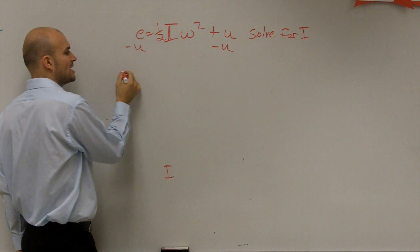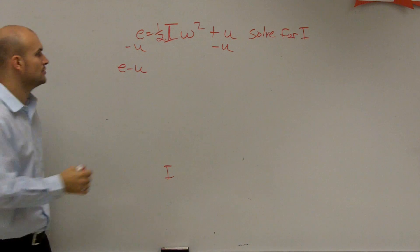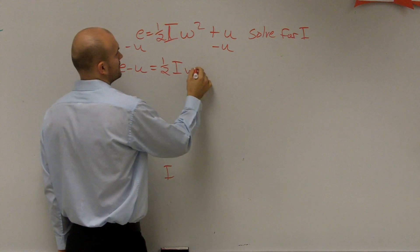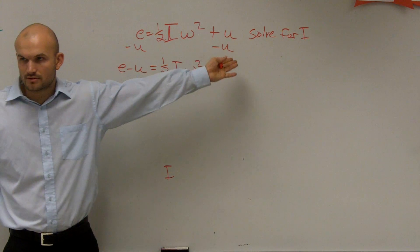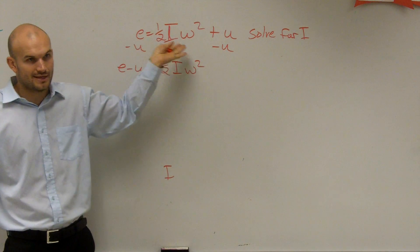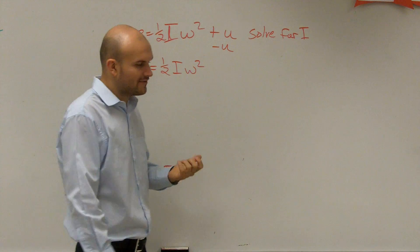Subtract it from both sides. Since these are not like terms, I cannot subtract them, and I'm just left with e minus u equals one half i w squared. Positive u minus u goes to zero. Zero plus anything is just going to be what your original anything was. So now I need to look at it and say, what's happening to my variable?